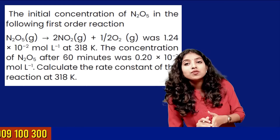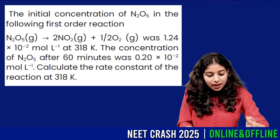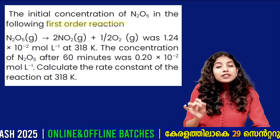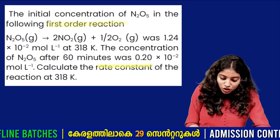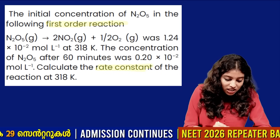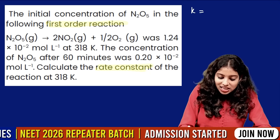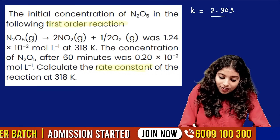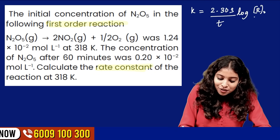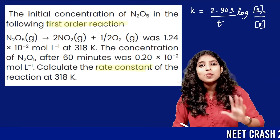Similar question on pseudo-first-order reactions. The initial concentration of N₂O₅ in this first-order reaction is given. The rate constant for a first-order reaction is K = 2.303 / t × log(R₀ / R).